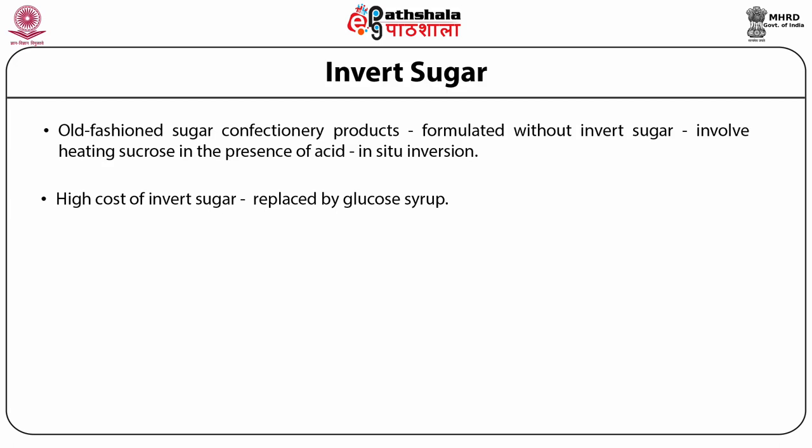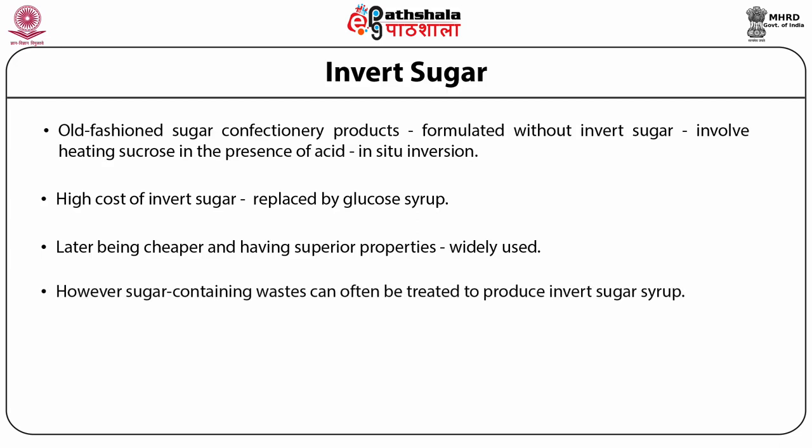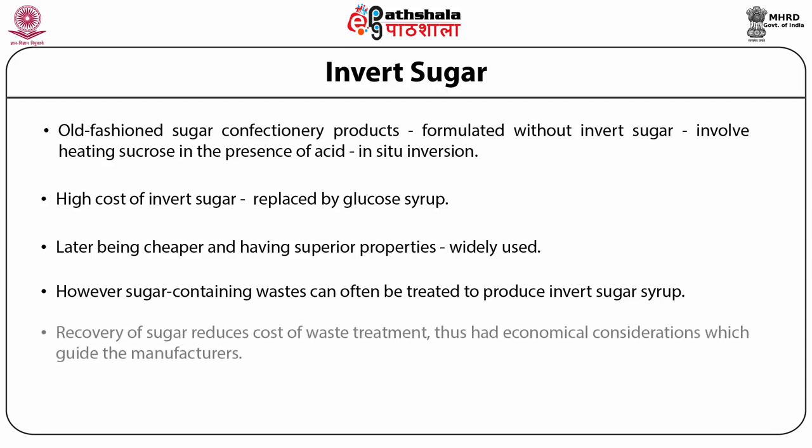Invert sugar, when added to a formulation, lowers the water activity and makes the product hygroscopic. Old-fashioned sugar confectionery products are formulated without essential use of invert sugar, as they involve heating sucrose in the presence of acid that generates some invert sugar in situ. The high cost of invert sugar has declined its use, with effective replacement by glucose syrup, which is cheaper and for some uses has superior properties.